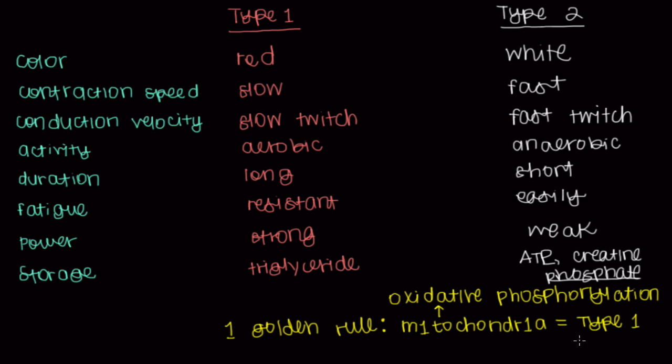So, by using this one golden rule here, that mitochondria are more prevalent in type 1 muscle fibers, we can figure out this whole table here. And that's the difference between type 1 and type 2 muscle fibers.